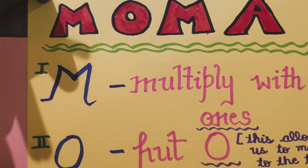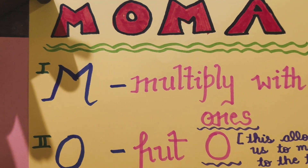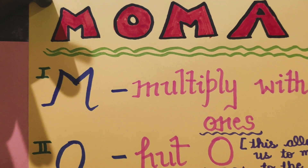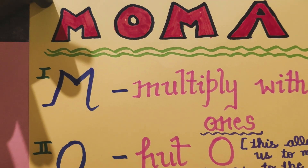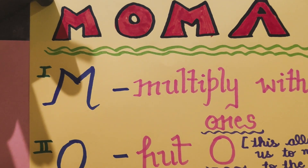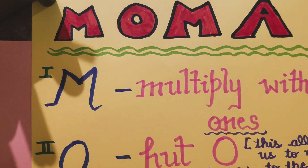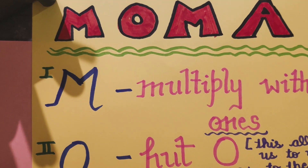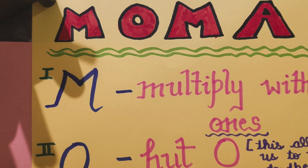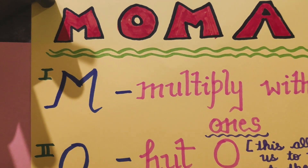We are going to learn three-digit by two-digit and two-digit by two-digit multiplication. For that, children, you need to learn a simple rule. The name of that rule is MAMA. I'm pretty much sure that you will never forget this word because this is our favorite word and our favorite person also, right?